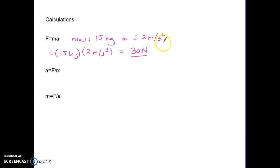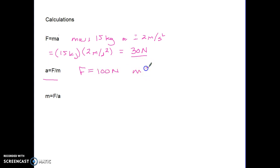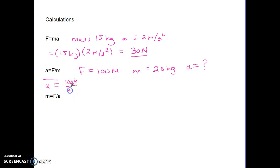That 30 Newtons is the net force — the total of all forces acting on that mass. Now, if there's a force of 100 Newtons acting on a mass of 20 kilograms, the acceleration equals F over m, which is 100 divided by 20, giving 5 meters per second squared.